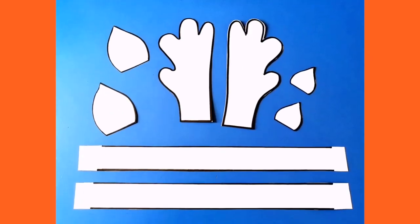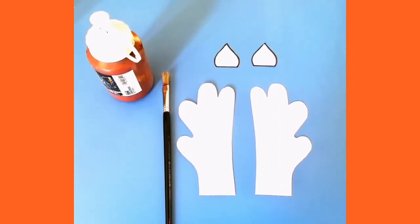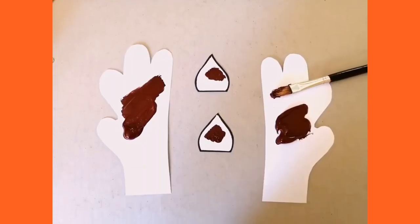Step number one is to cut out the templates with the ears and the antlers of the reindeer. Step number two is to start painting and covering all the white spaces using brown paint.